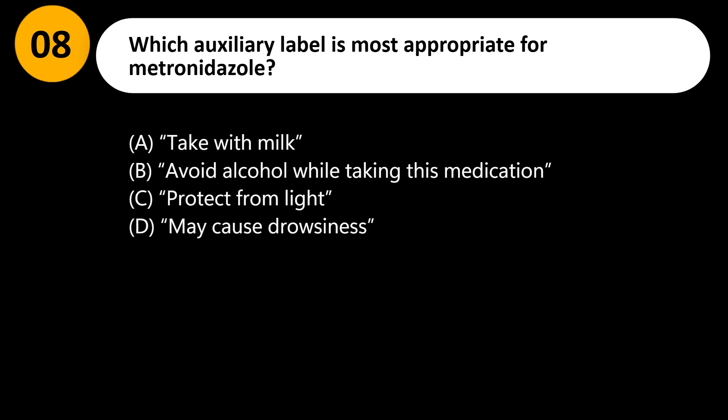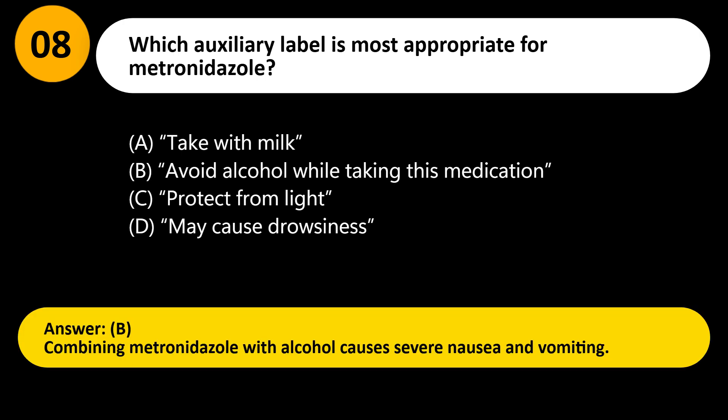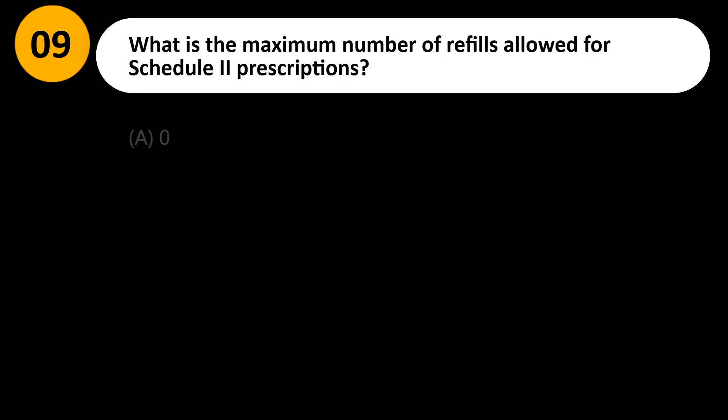Which auxiliary label is most appropriate for metronidazole? A) Take with milk, B) Avoid alcohol while taking this medication, C) Protect from light, D) May cause drowsiness. Answer: B. Combining metronidazole with alcohol causes severe nausea and vomiting.